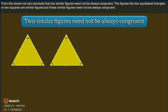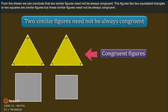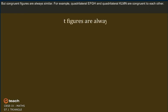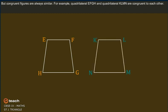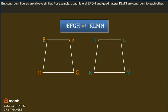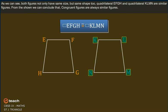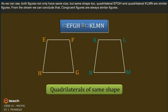Figures like two equilateral triangles or two squares are similar figures, but these similar figures need not always be congruent. However, congruent figures are always similar. For example, quadrilateral EFGH and quadrilateral KLMN are congruent to each other. As we can see, both figures not only have the same size but the same shape too, so they are similar figures. We can conclude that congruent figures are always similar figures.